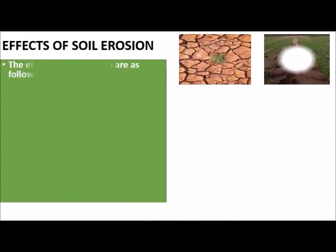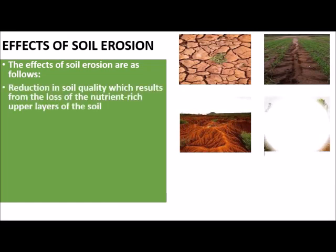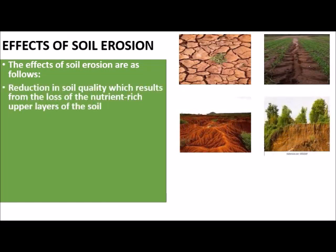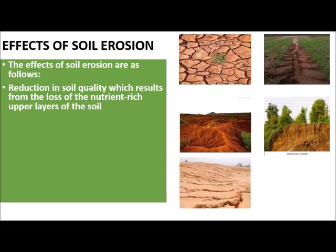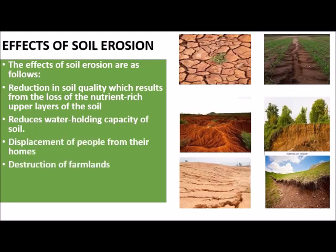Effects of soil erosion are as follows: reduction in soil quality, which results from the loss of the nutrient-rich upper layers of the soil; reduction in water-holding capacity of the soil; displacement of people from their homes; destruction of farmland; collapse of buildings; and lastly, damage of soil surface and roads.